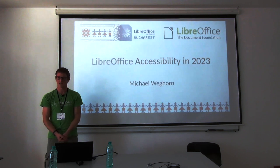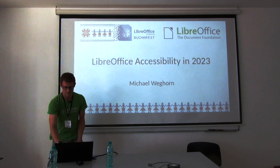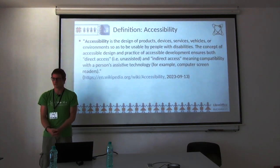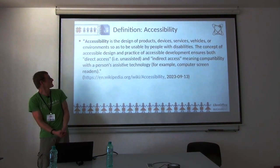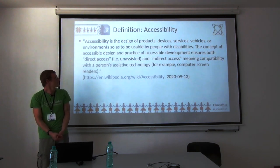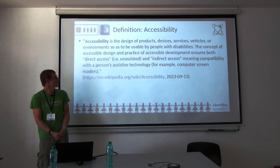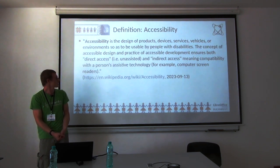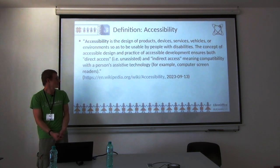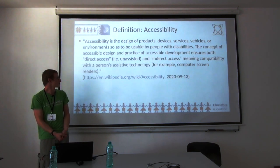I'll be talking about the technical backgrounds and some improvements from the past. Let's start with what accessibility is. From Wikipedia: accessibility is the design of products, devices, services, vehicles, or environments so as to be usable by people with disabilities. Accessible design ensures both direct access — unassisted — and indirect access, meaning compatibility with assistive technology such as screen readers.